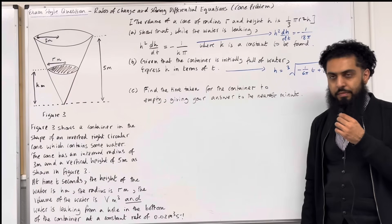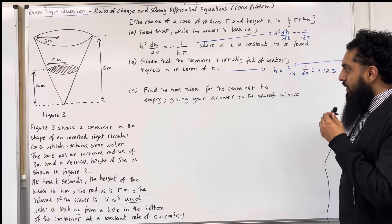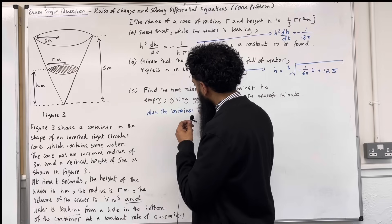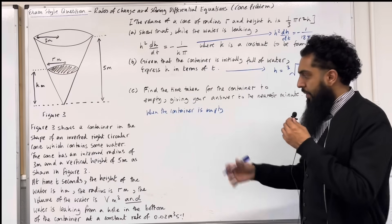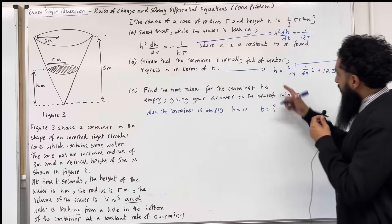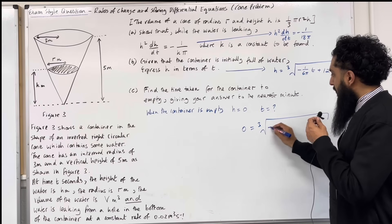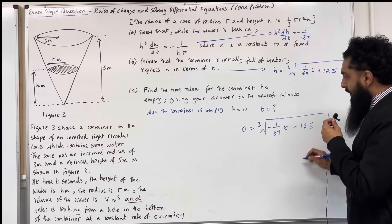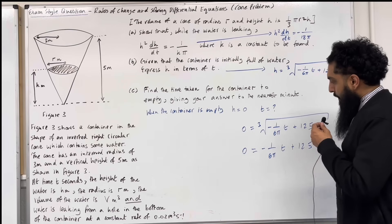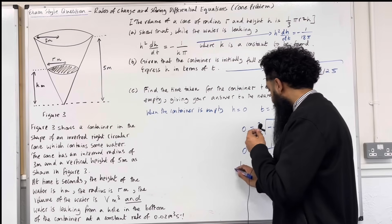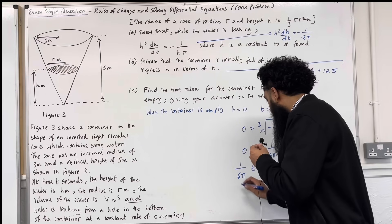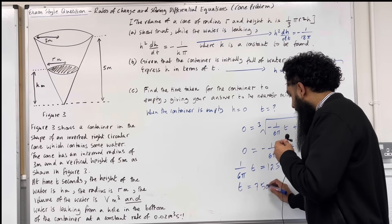Moving on to Part C: find the time taken for the container to empty, giving your answer to the nearest minute. When the container is empty there is no water, so the height equals 0. Substituting h = 0: 0 = cube root of (−t over 6π + 125). Cubing both sides: 0 = −t over 6π + 125, so t over 6π = 125, and multiplying both sides by 6π gives t = 750π seconds.